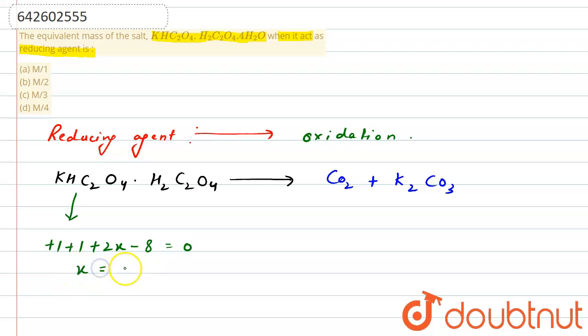From here, the value of x will be 3. Now, we know the oxidation state of carbon in here is plus 3, and in here as well plus 3.